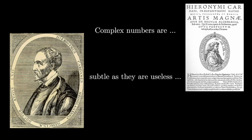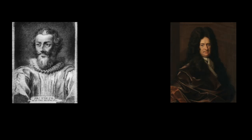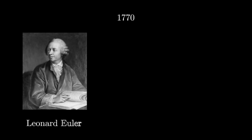Other attempts came from Raphael Bombelli in 1572 and Leibniz in 1702. Even in 1770, the complex numbers remained so mysterious and confusing that it was possible for the great Euler to argue that root of minus 2 times root minus 3 is equal to root 6.